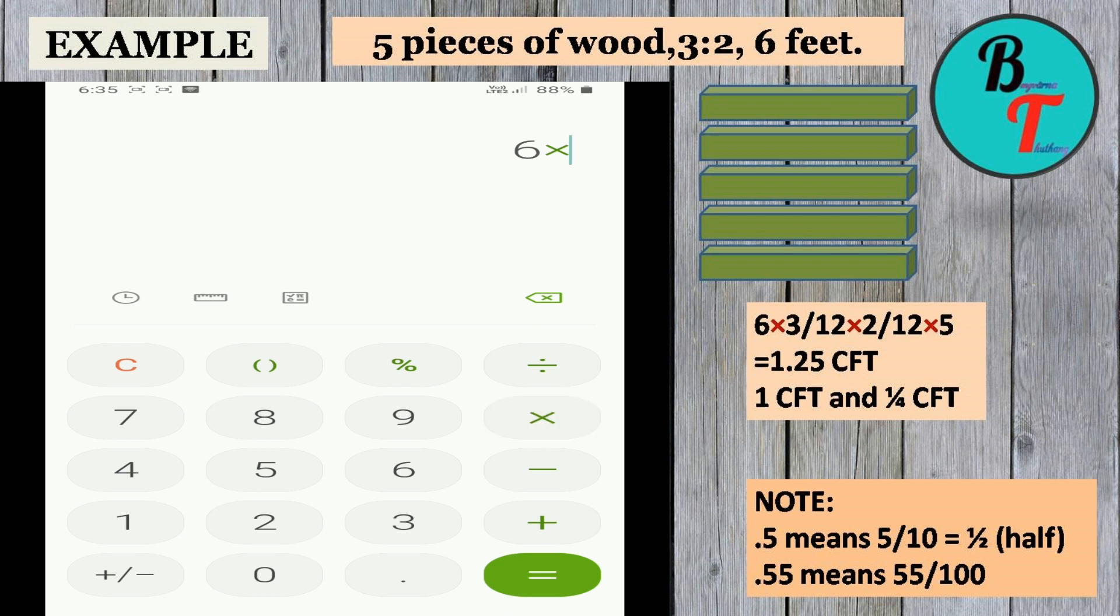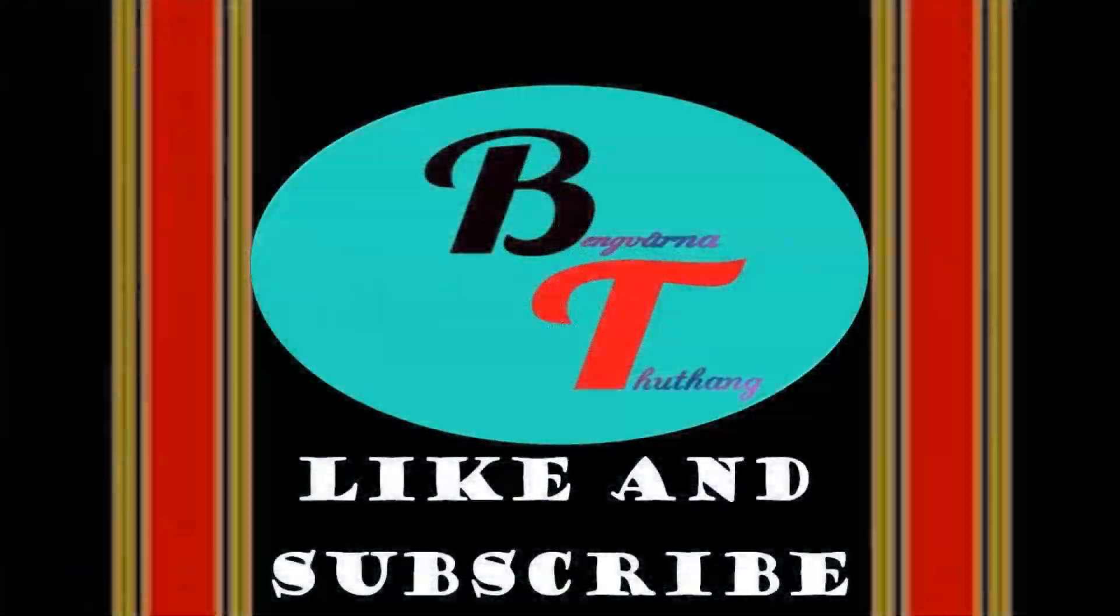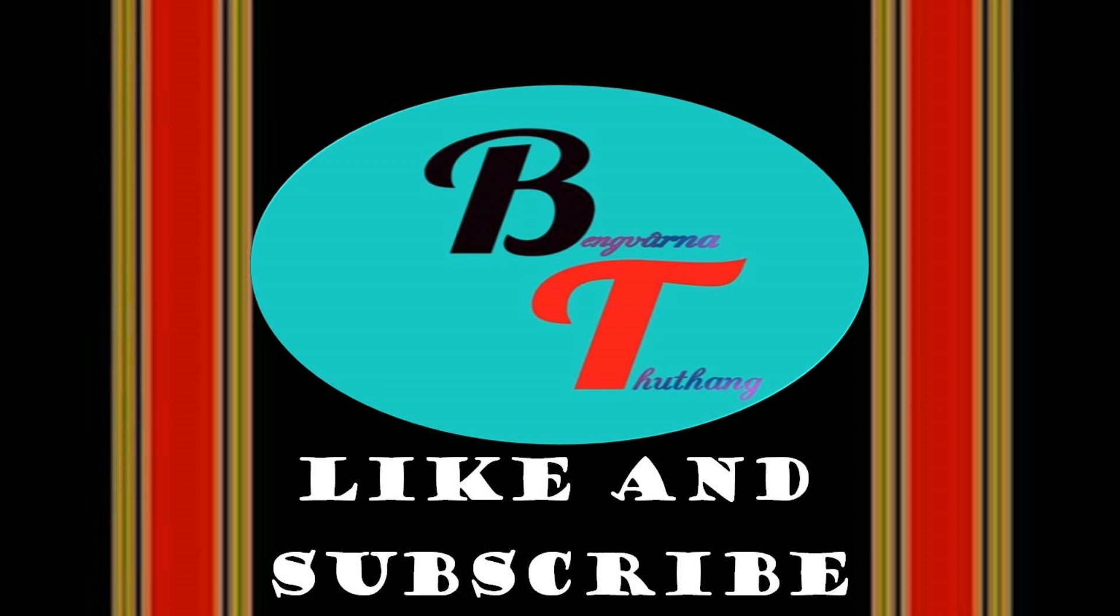6 into 3 by 12 into 2 by 12 into 5 equals 1.25. If you like the video, please give a thumbs up and subscribe. Thank you.